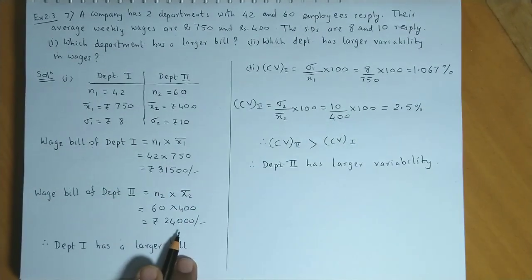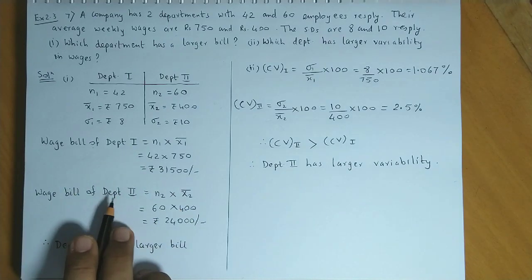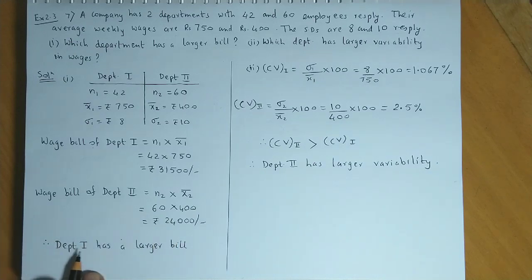Now if we compare the two wage bills, Department 1 is 31,500 and Department 2 is 24,000. Therefore, Department 1 has a larger wage bill.